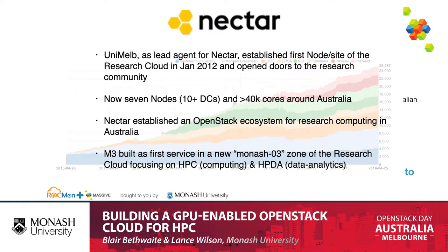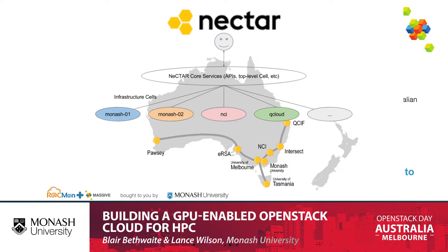Nectar really established an OpenStack ecosystem in Australia for research computing, starting back in 2012 — fairly early days of OpenStack. The interesting thing about the Nectar architecture is that rather than having a multi-region cloud, we have a single region with one set of APIs and a dashboard that gives you access to infrastructure all over the country, which makes it significantly easier to use for our end users.